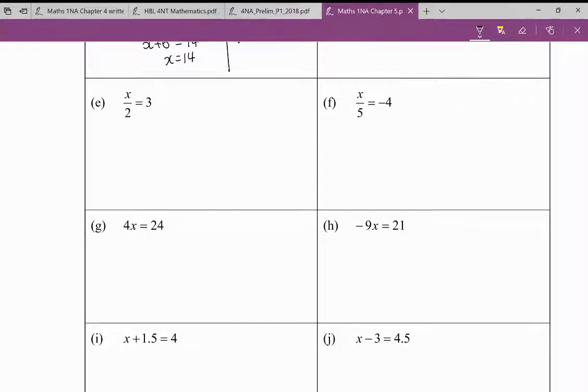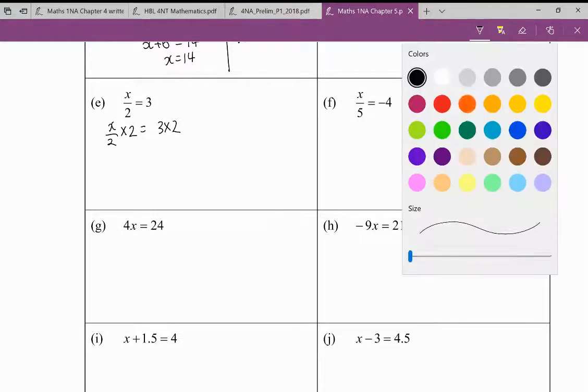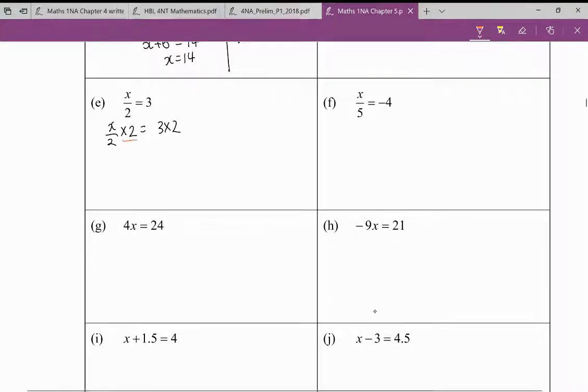For part e, I have x divided by 2 equals to 3. How do I get rid of this 2 here? So it's divided by 2 right? I think of my opposite sign, so divide I think of times. So the only way to get rid of this over 2 is to times 2 on both sides. So x over 2 times 2, I will get x equals to 6.